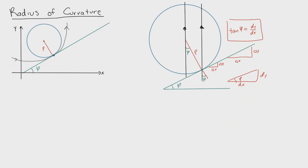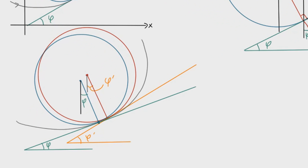One important note: the radius rho is perpendicular to the tangent line. Now, with the redrawn picture, an object moves along the gray path and we have two states of the radius of curvature — the blue circle is the first state and the red circle is the second. To see how the radius of curvature changes as the particle moves, we look at the change in angle: phi-prime minus phi.